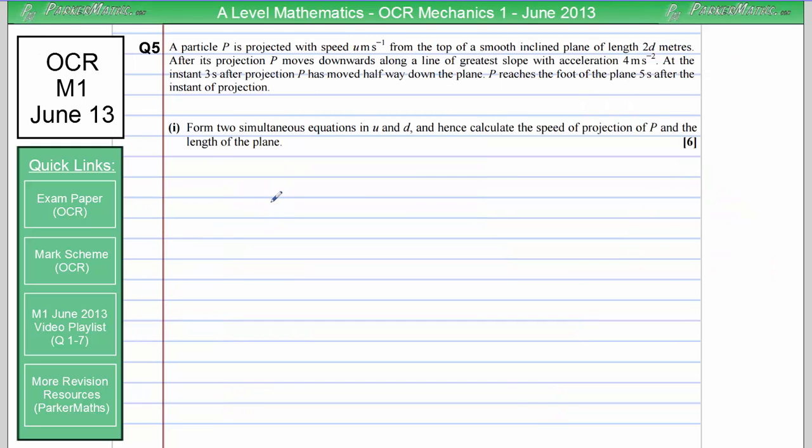Question 5. Particle P is projected with speed u meters per second from the top of a smooth inclined plane of length 2d meters. After its projection, P moves downwards along a line of greatest slope with acceleration 4 meters per second squared. At the instant 3 seconds after projection, P has moved halfway down the plane and P reaches the foot of the plane 5 seconds after the instant of projection.